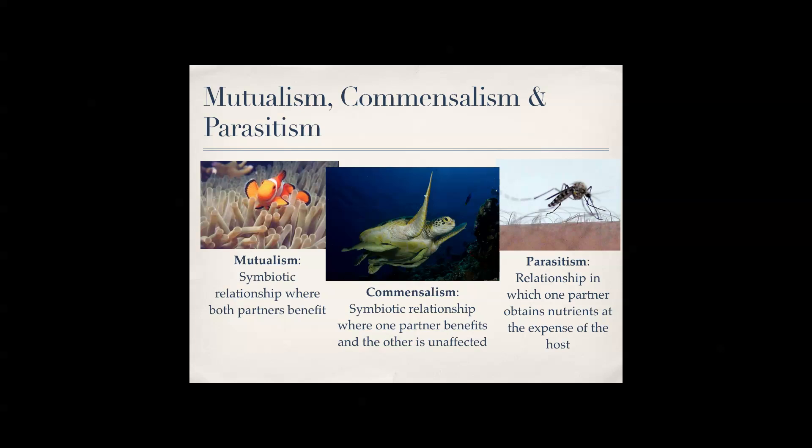Commensalism is a symbiotic relationship where one partner benefits and the other is unaffected — like a turtle that isn't really affected by fish getting nutrients off its body. Parasitism is a relationship in which one partner obtains nutrients at the expense of the host. No one likes mosquitoes, but they benefit while putting you in harm's way — causing malaria in Africa or just an itching sensation elsewhere. You also have tapeworms and things like that.